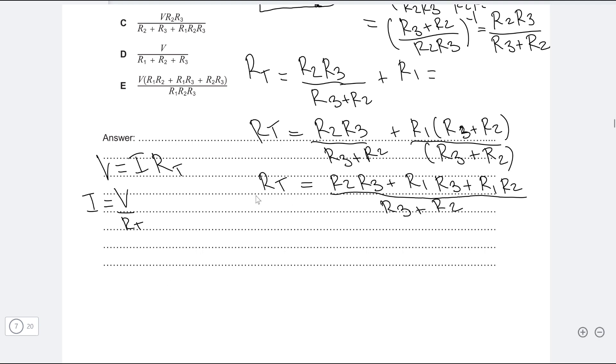So this means that I will be equal to V divided by R total. And remember, dividing by a fraction is exactly the same as multiplying by the inverse. So the inverse or 1 over R total is just this fraction flipped up. So it's going to be R3 plus R2 over R2 R3 plus R1 R3 plus R1 R2.